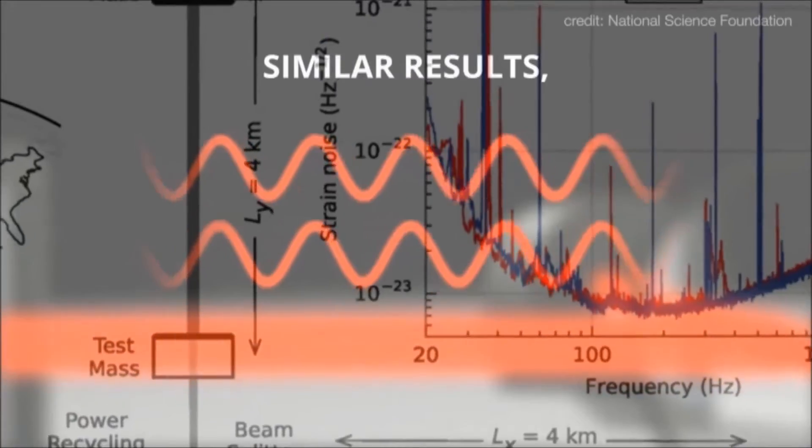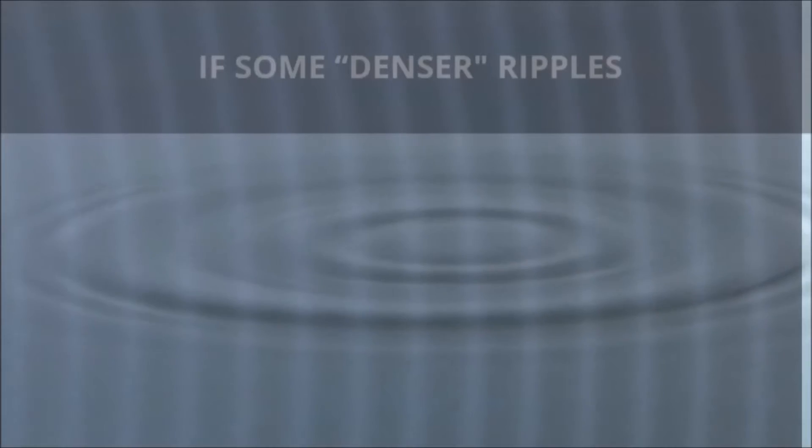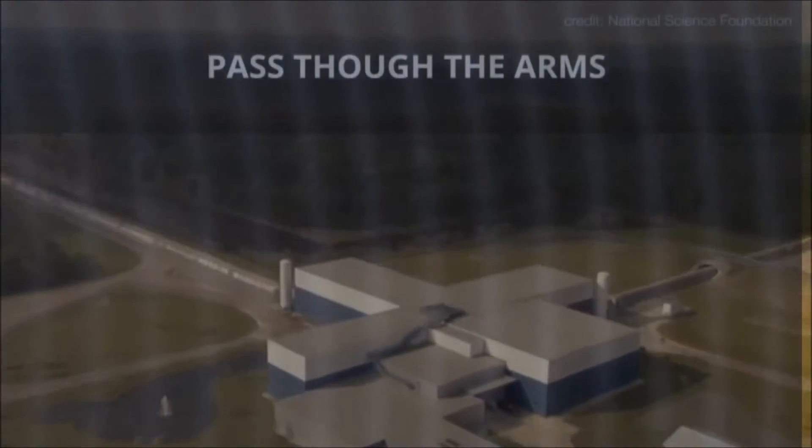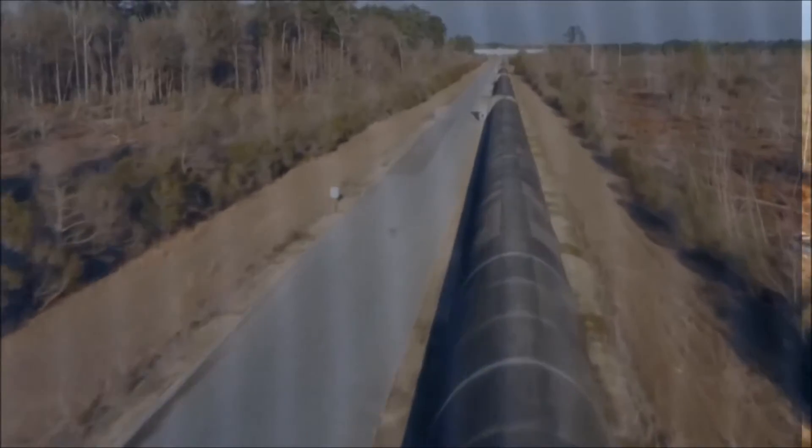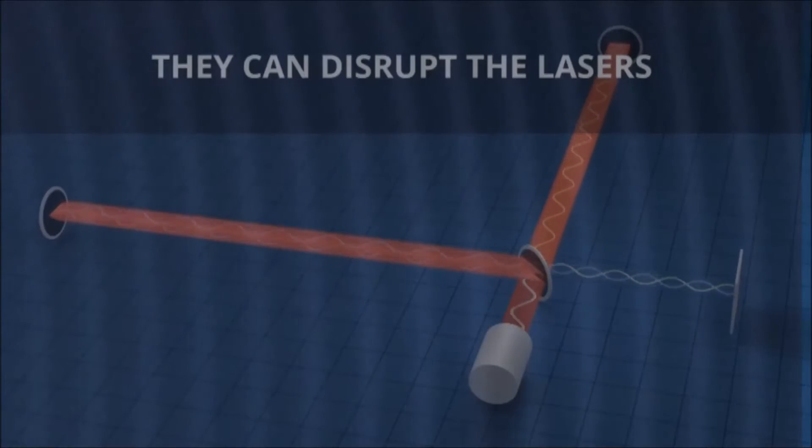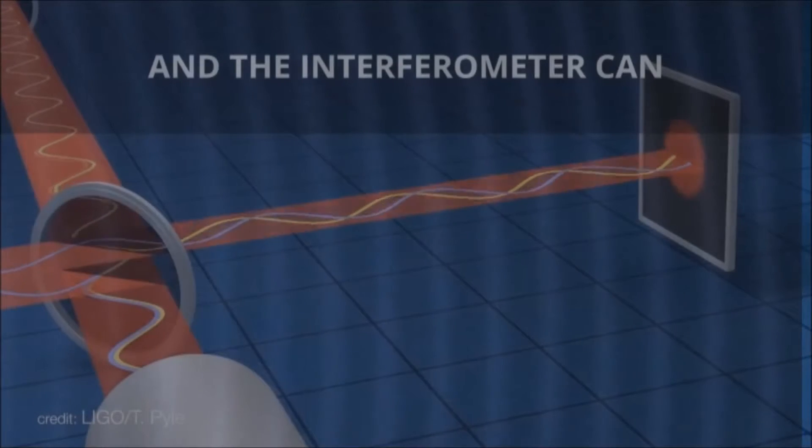The observatory can still obtain similar results if some denser ripples pass through the arms of the LIGO. They can disrupt the lasers and the interferometer can detect them.